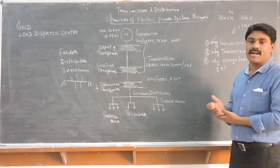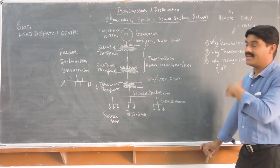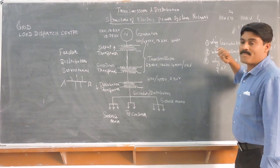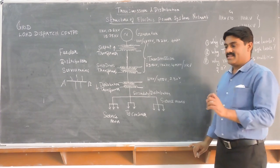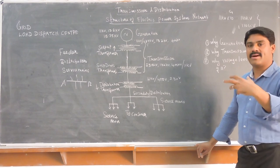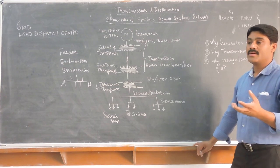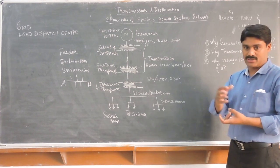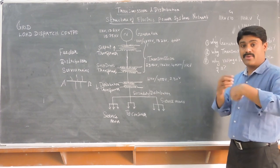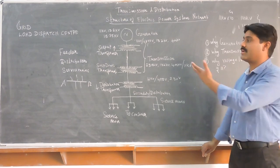One more technical reason: in any kind of generation, if you want to tap power from the rotating part to the fixed part, it is very complicated — regarding the brushes, the collection of pressures, and other factors. Power tapped from the rotating part and transferred to the fixed part is not easy. That is also one of the reasons for keeping generation at a low voltage level.